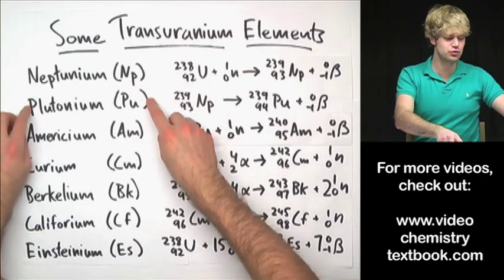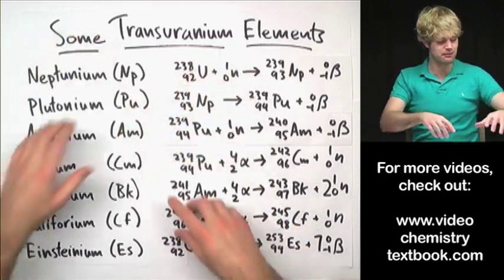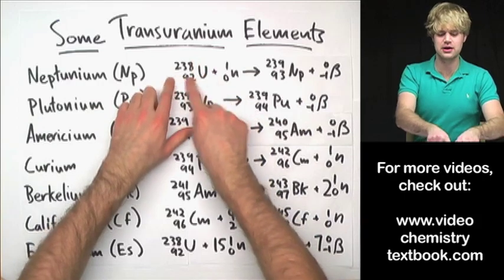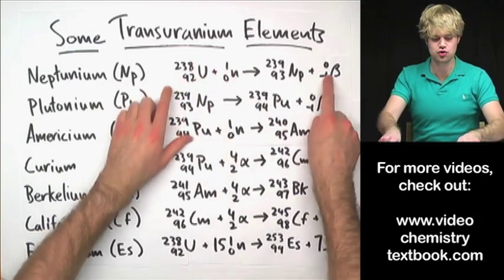Neptunium, Plutonium, Americium, Curium, and so forth, by taking elements like uranium, we add neutrons to them.